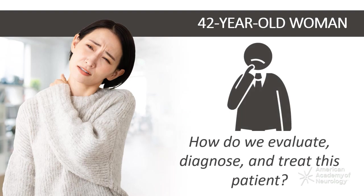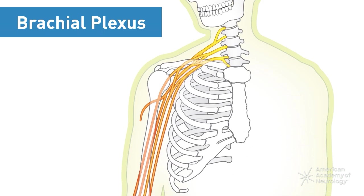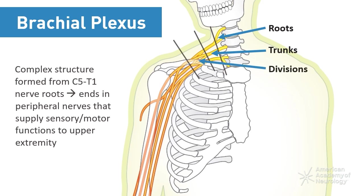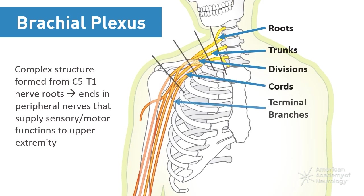How do we evaluate, diagnose, and treat this patient? The brachial plexus is a complex structure formed from the C5 to T1 nerve roots and ends in individual peripheral nerves that supply sensory and motor functions to the upper extremities. The brachial plexus is organized proximally to distally into components called roots, trunks, divisions, cords, and terminal branches.